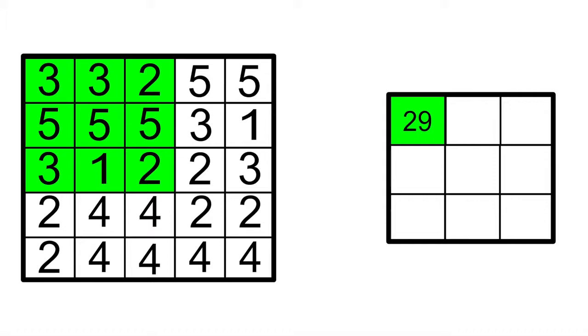Let's look at the big image as an example. In the green box in the big image, the darkness numbers are 3, 3, 3, 5, 5, 5, 3, 1, 2. All of these numbers add up to 29.